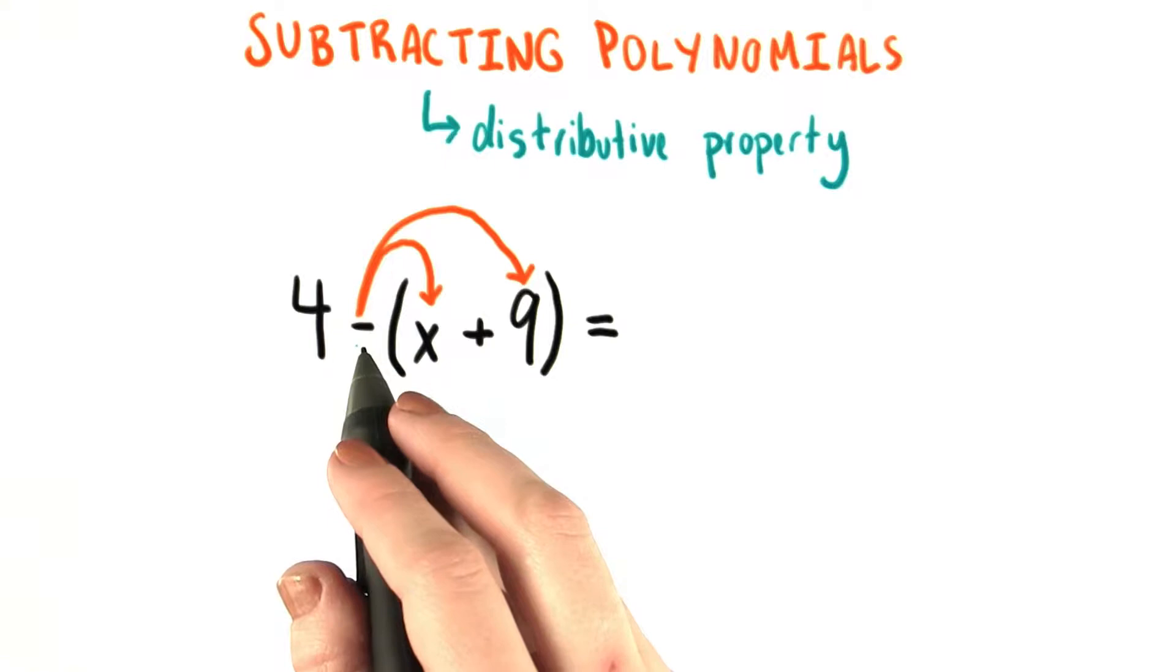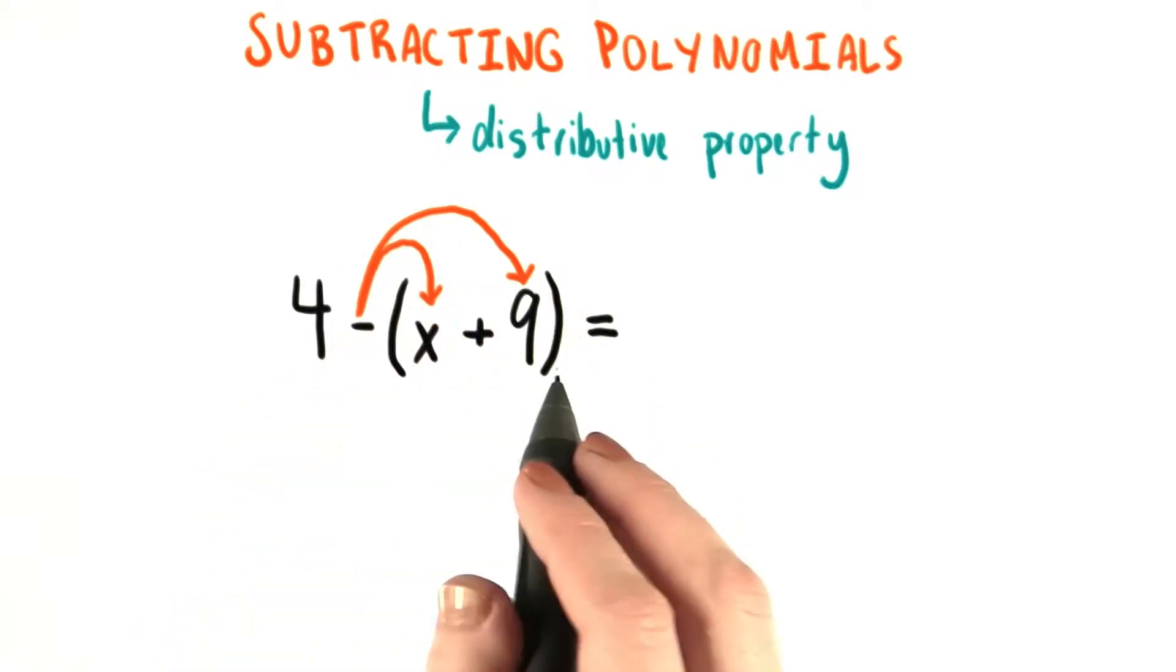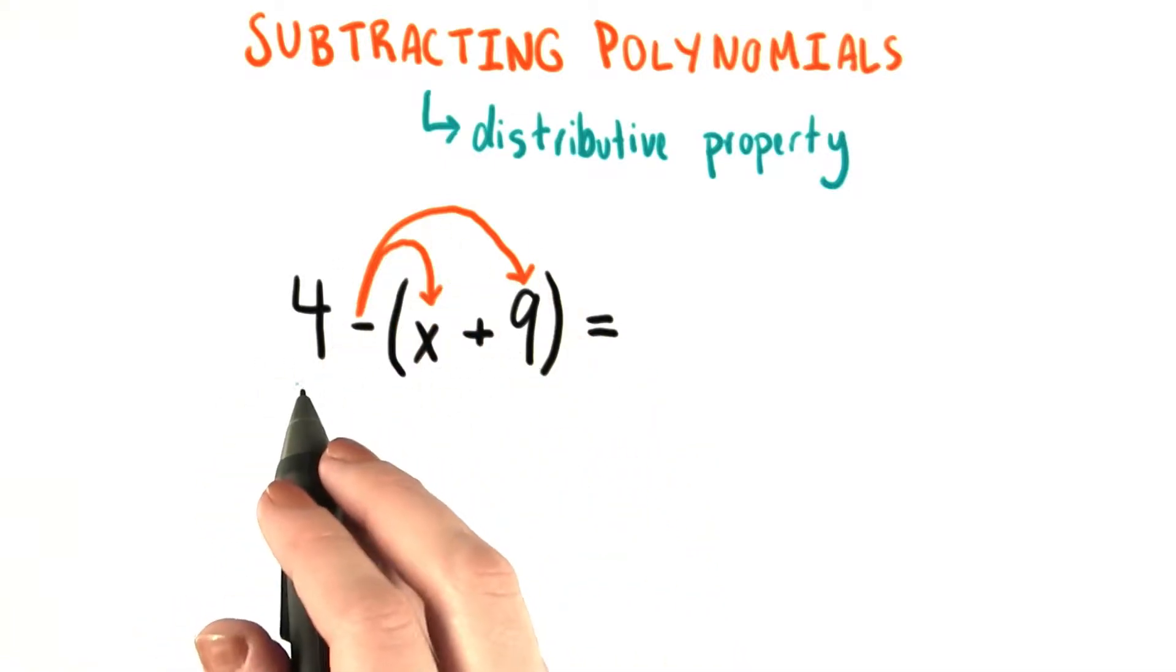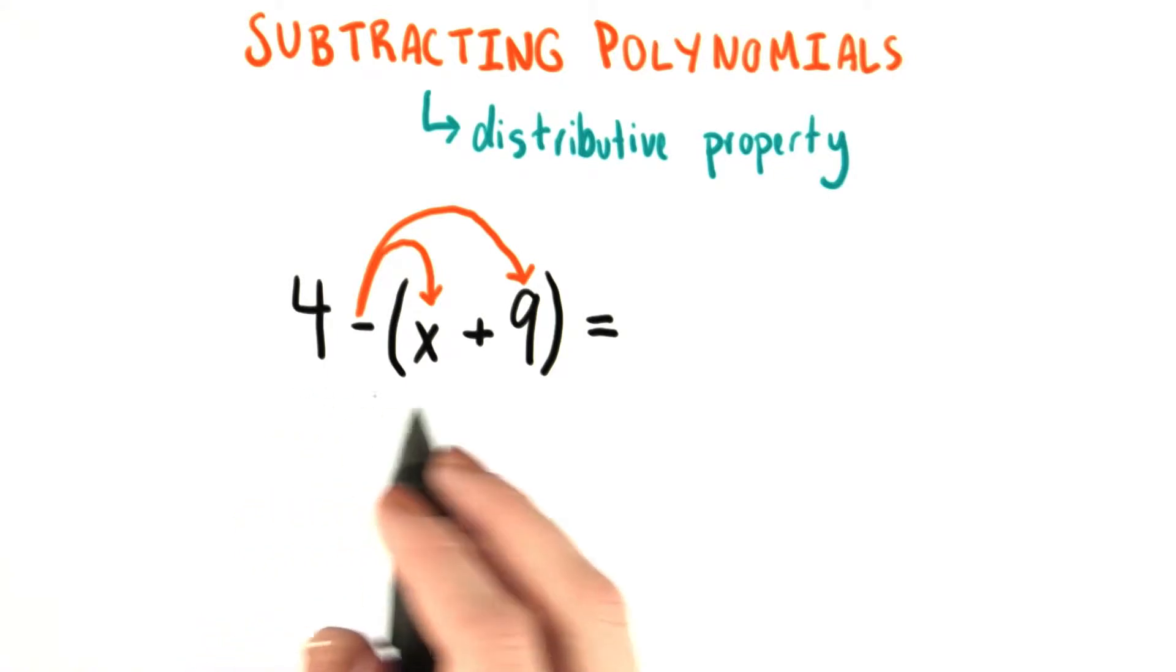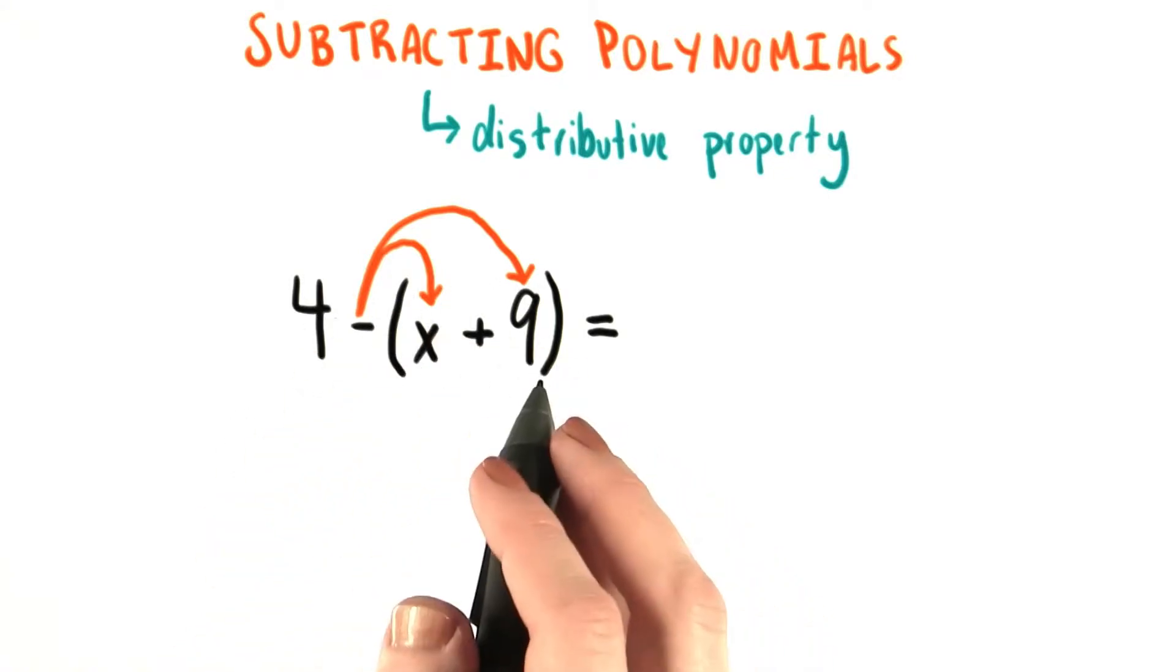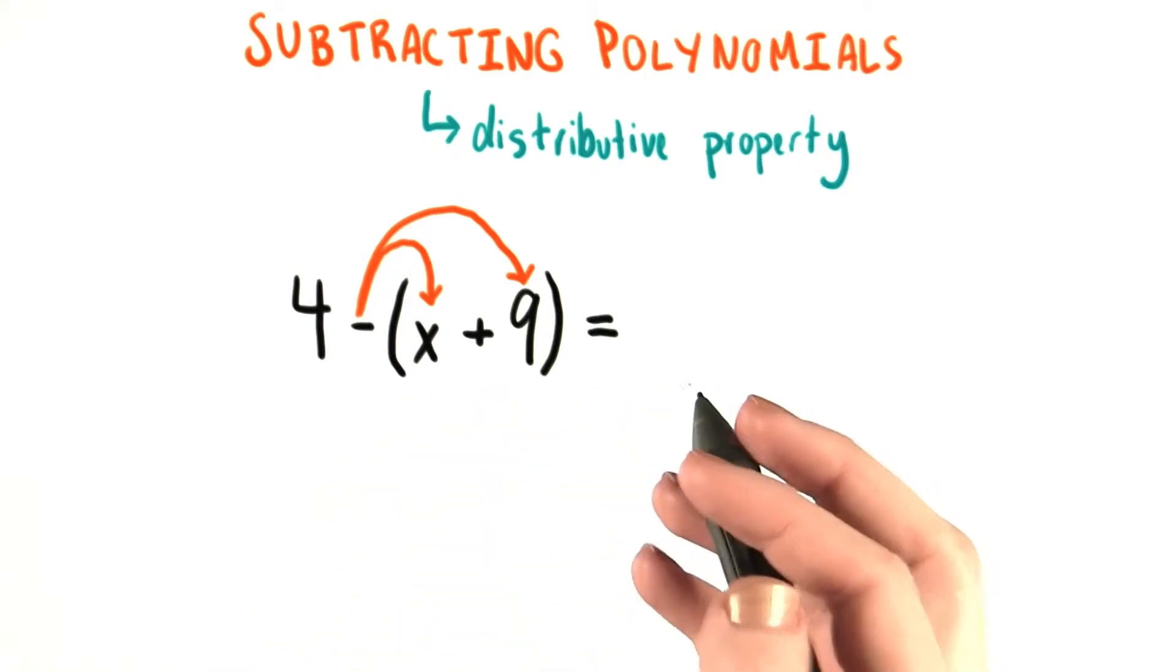So we're distributing this negative sign to both the x and the 9 when we say that we want to subtract them both from the 4. I'm going to show you a slightly different way of looking at how to distribute that negative sign, and what distributing a negative sign really means.